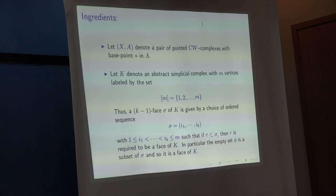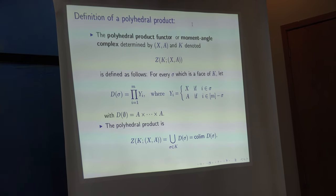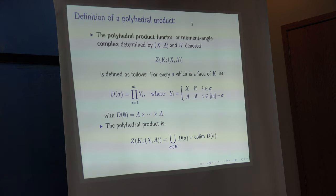And the vertices of K will be denoted 1 through M. Now, K consists of a collection of subsets of the set 1 through M, which satisfies the standard hereditary property. So now, the polyhedral product function, or moment angle complex, turn out to be exactly the same thing.